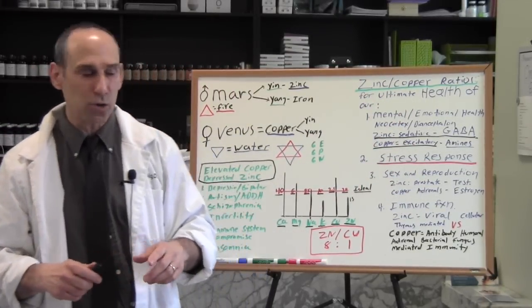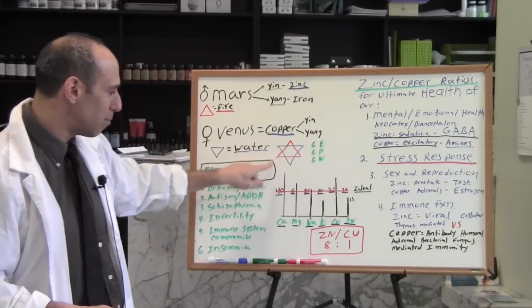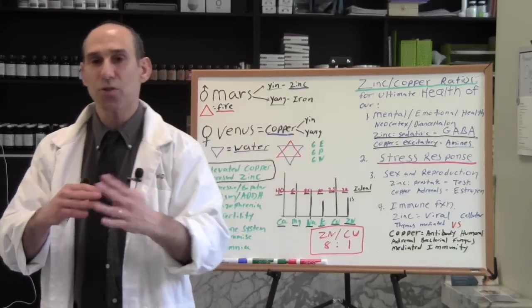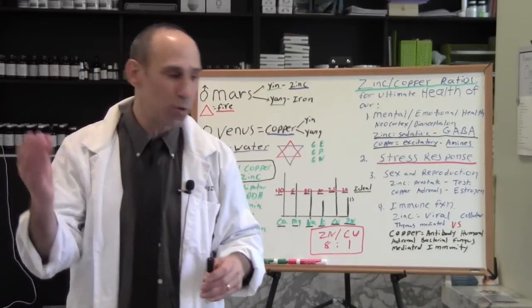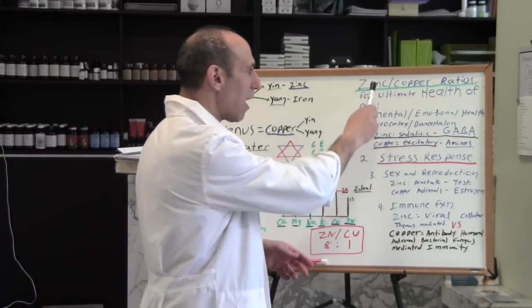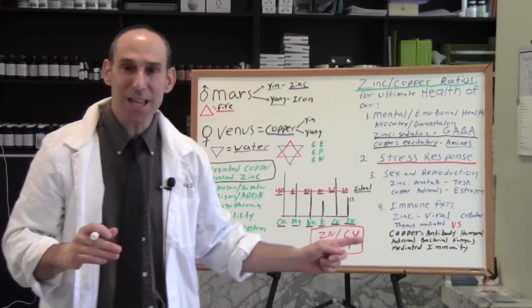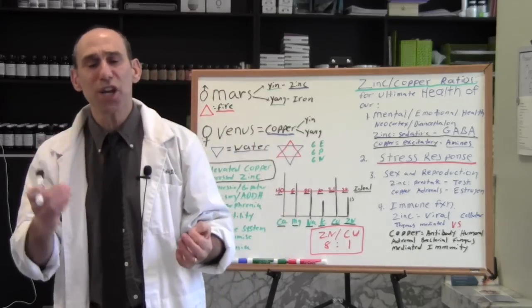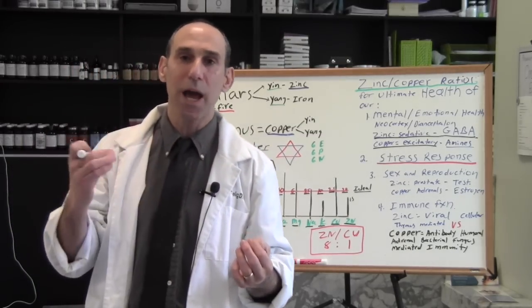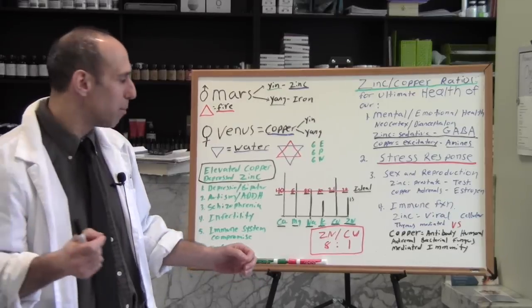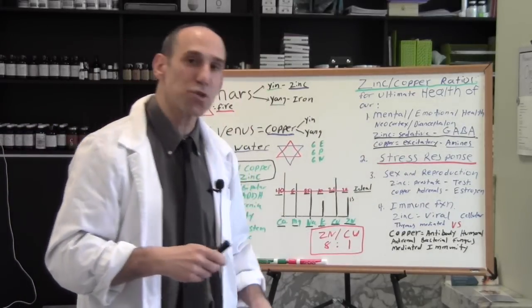So whenever we're looking at a hair tissue, we're always looking at the big four: calcium, magnesium, sodium, potassium, because those are the first four things we have to address. But understanding how zinc and copper influence the sodium and potassium are integral parts and how we help balance out the minerals and the mineral ratios in the body to deal with the stress response.